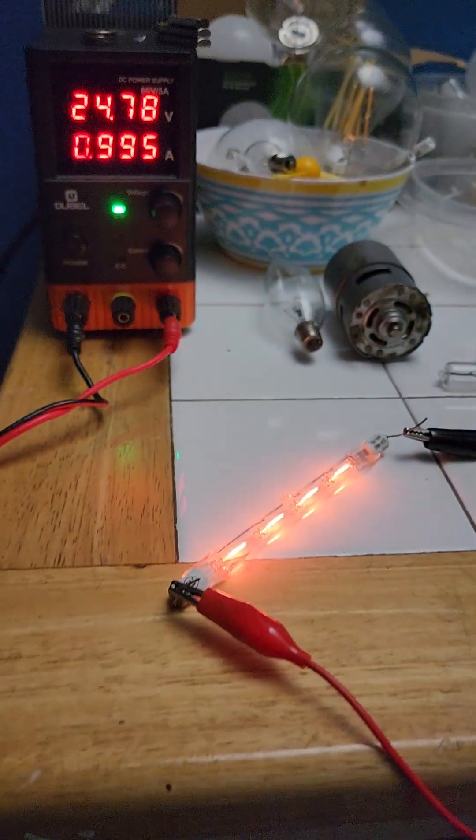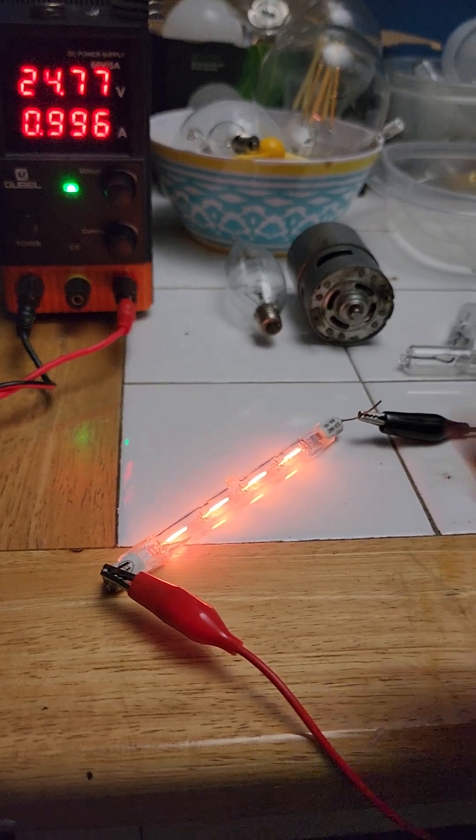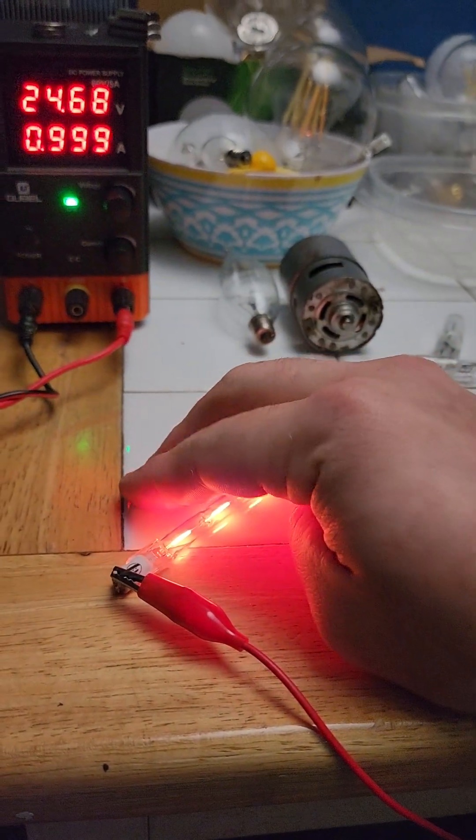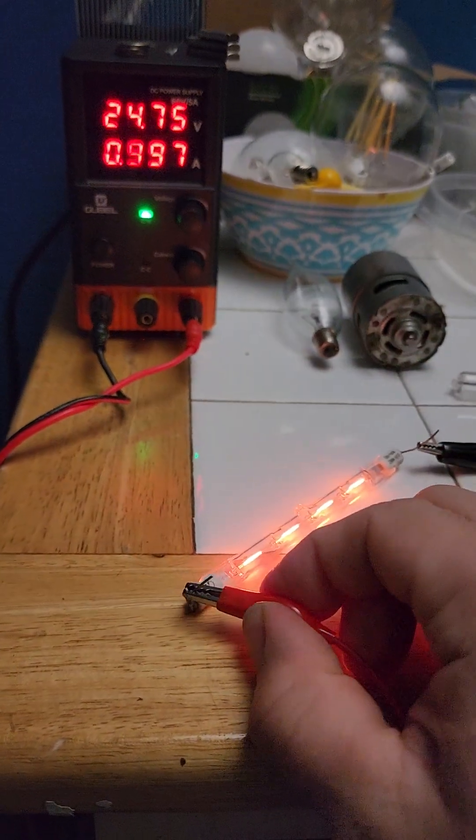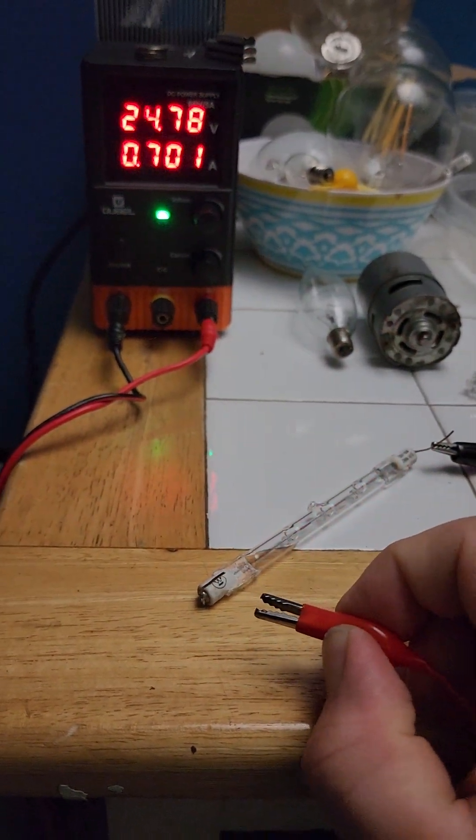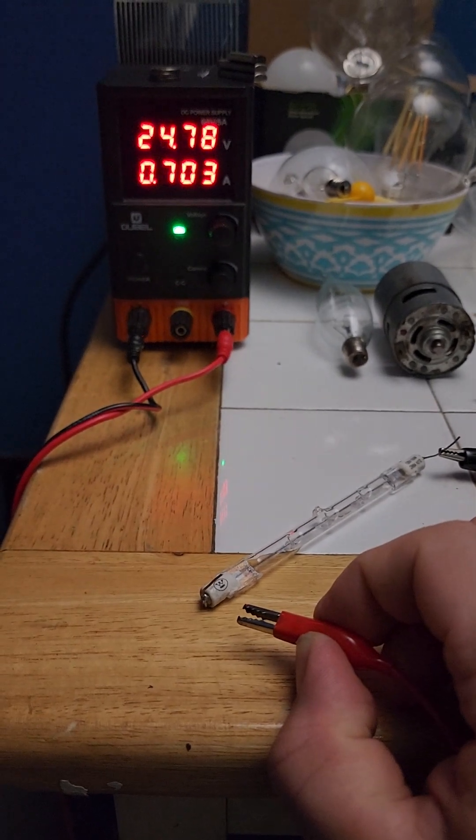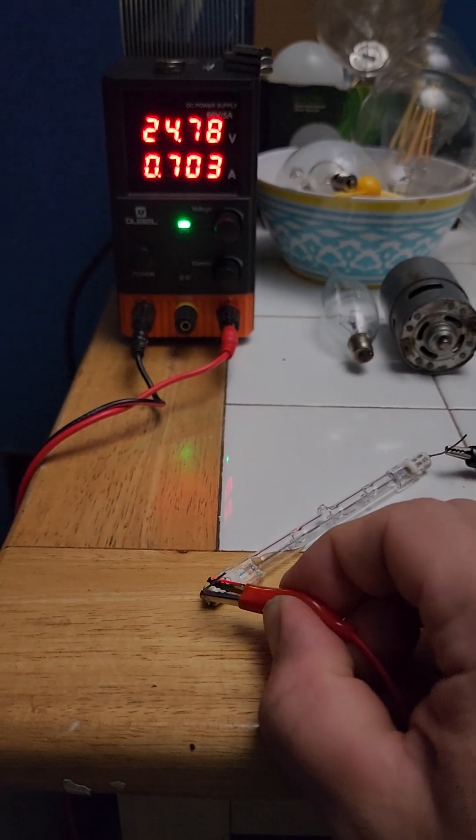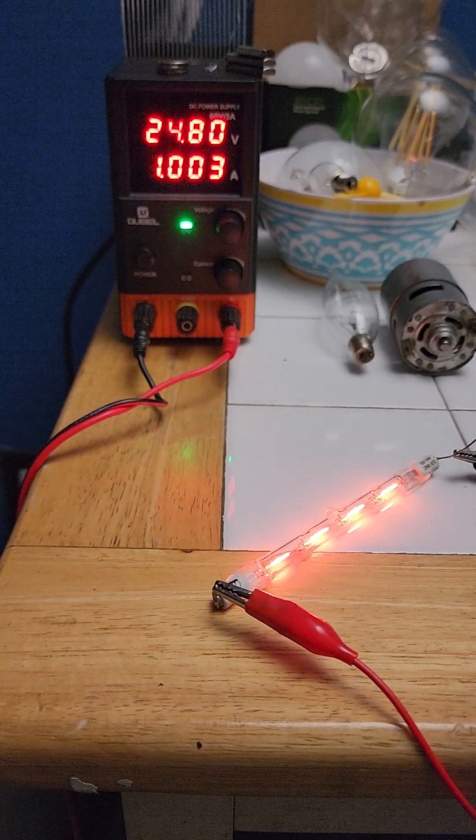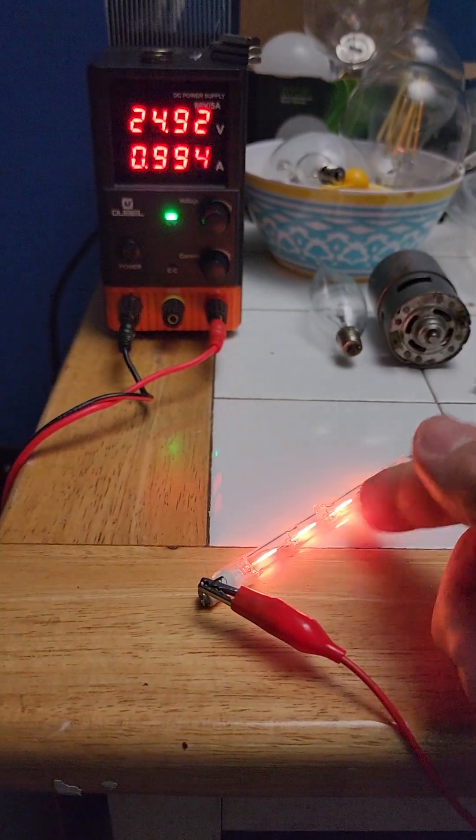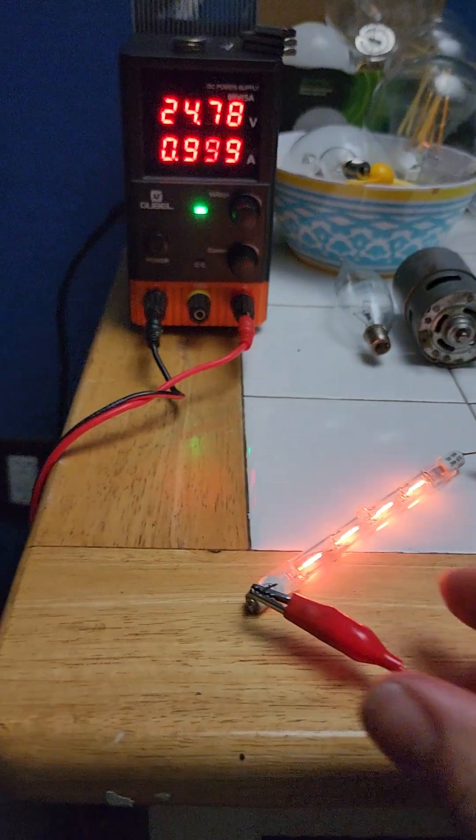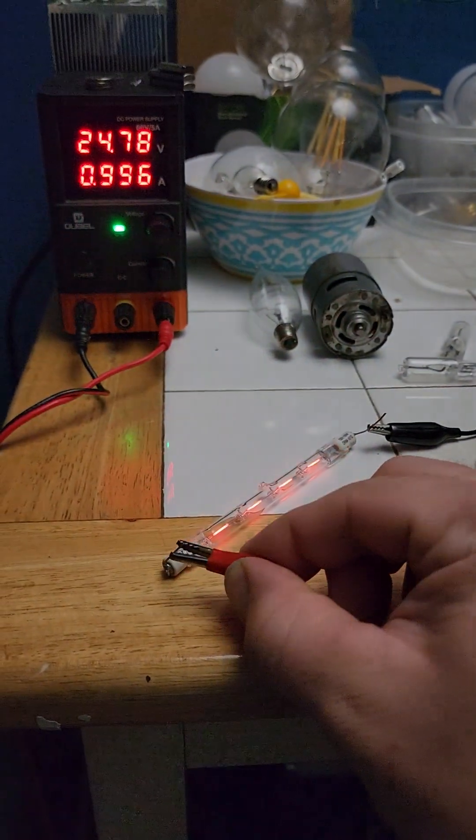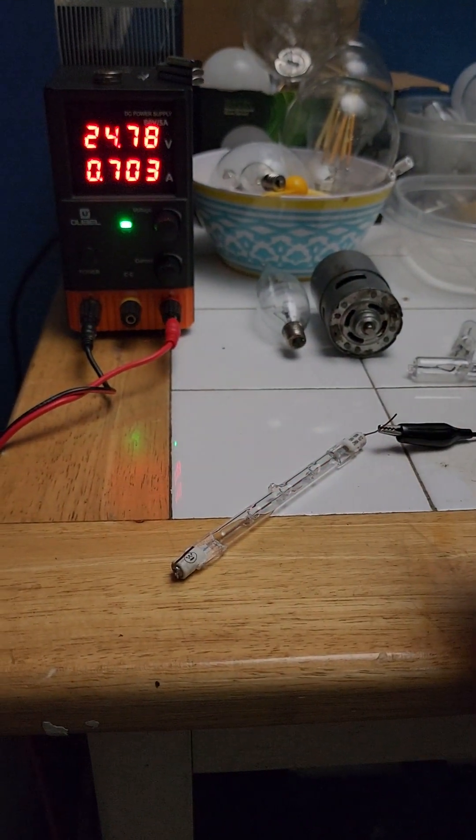That's giving off a lot of heat. So bulb not running: 700 milliamps. That bulb is using a lot more than 300 milliamps. I can feel the heat coming off that.